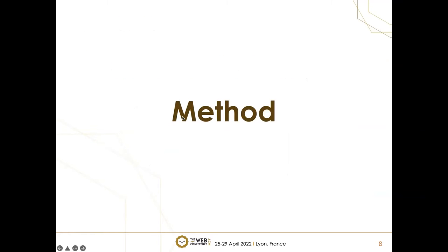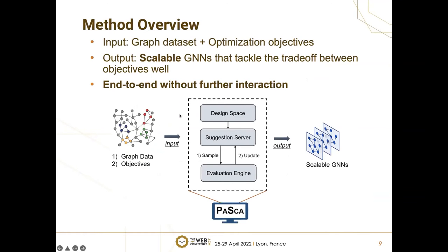The answer is yes. We will now introduce our method. PASCA only requires two inputs: a graph dataset and some objectives. Given these two inputs, PASCA automatically searches for promising designs over its inner design space and outputs scalable networks trained on the input graph that tackle the trade-off between the objectives well. Note that PASCA is an end-to-end system — it does not require interactions to define an architecture or define a training process, thus reducing the threshold for beginners to use graph neural networks in web-based applications.